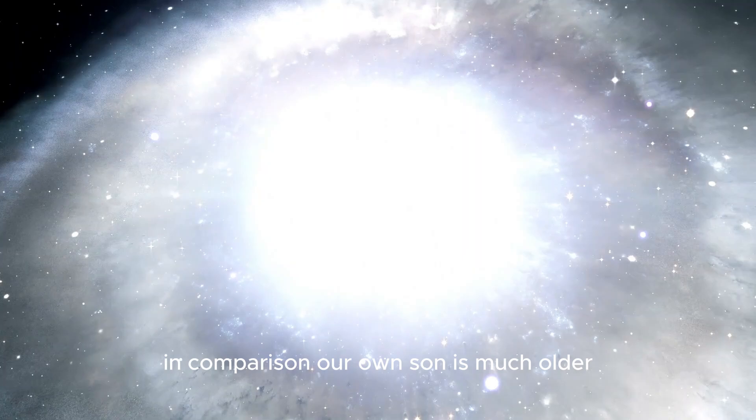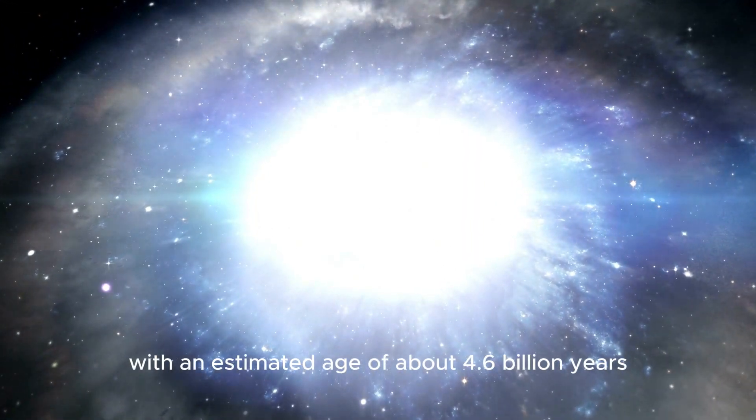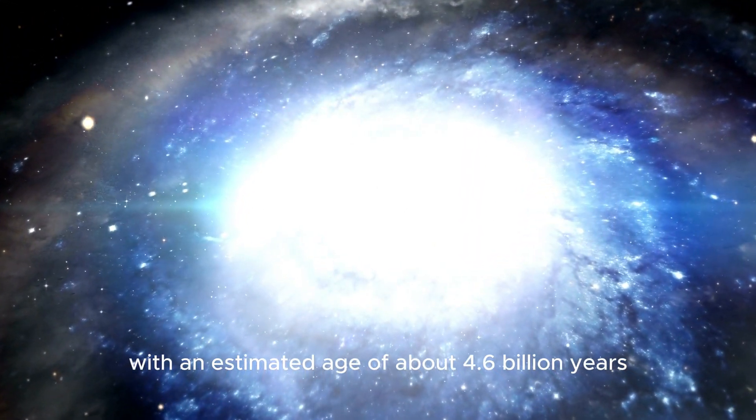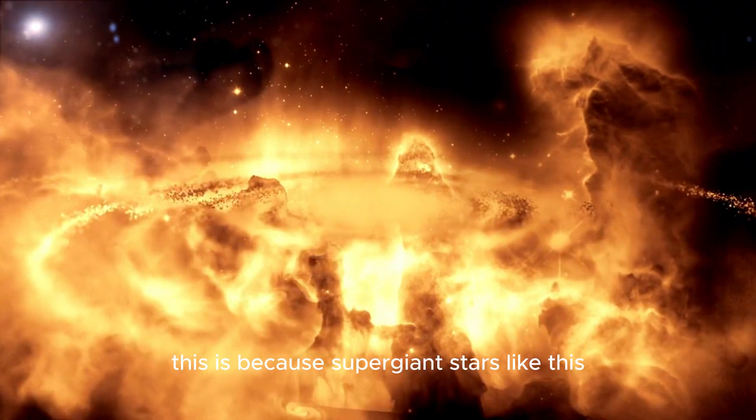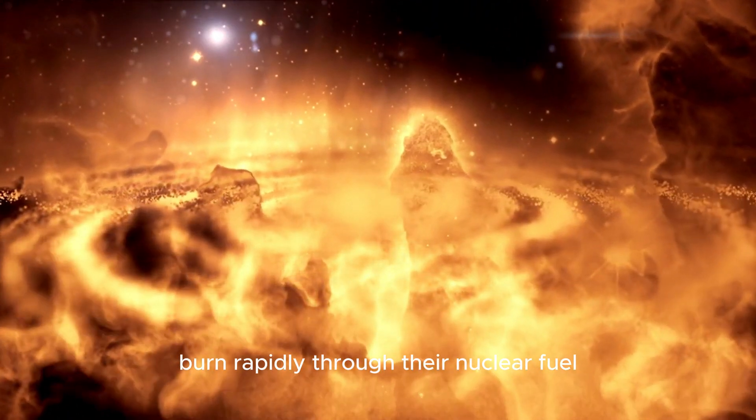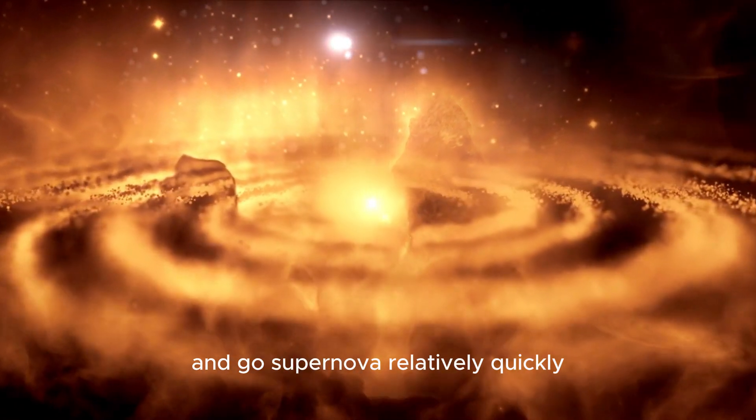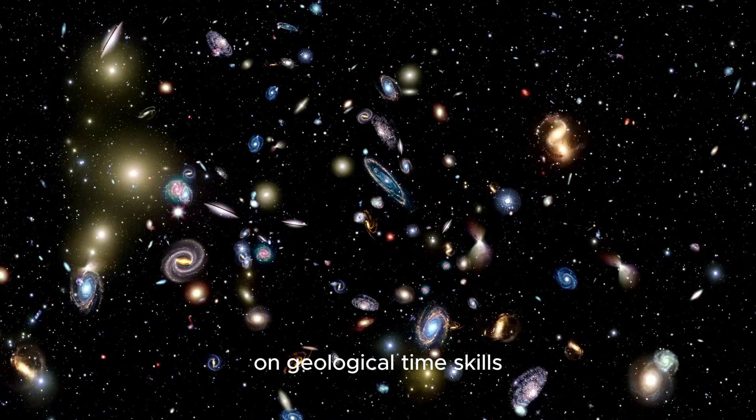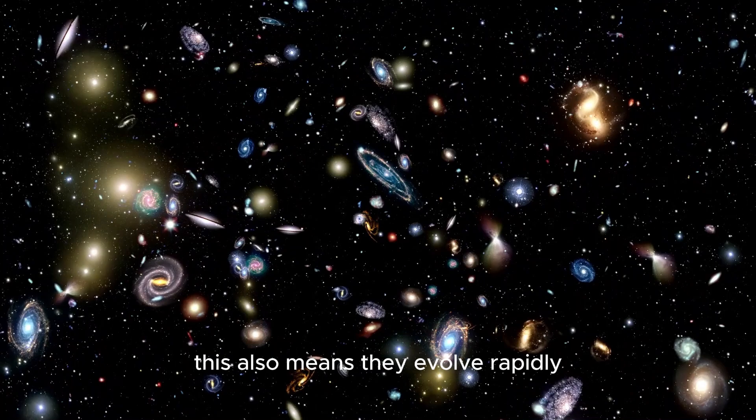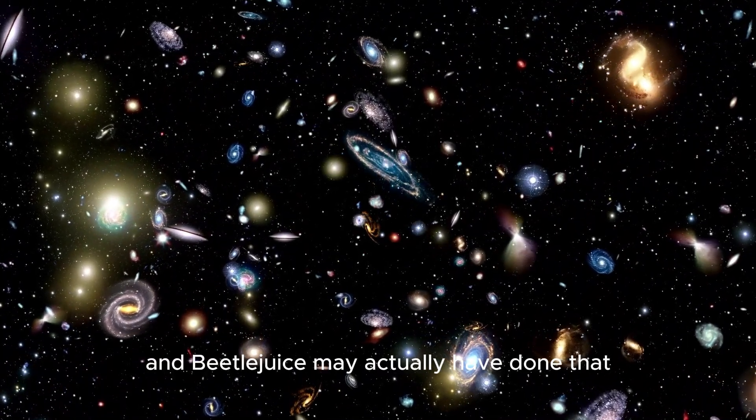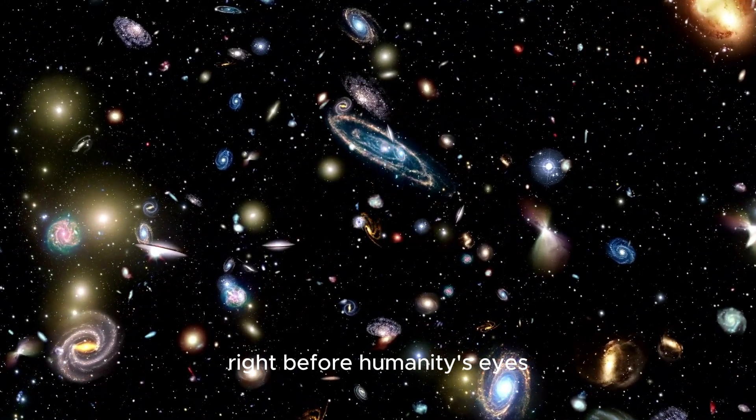With an age estimated to be around 8 to 10 million years, in comparison, our own sun is much older, with an estimated age of about 4.6 billion years. This is because supergiant stars like this burn rapidly through their nuclear fuel and go supernova relatively quickly on geological timescales. This also means they evolve rapidly, and Betelgeuse may actually have done that right before humanity's eyes.